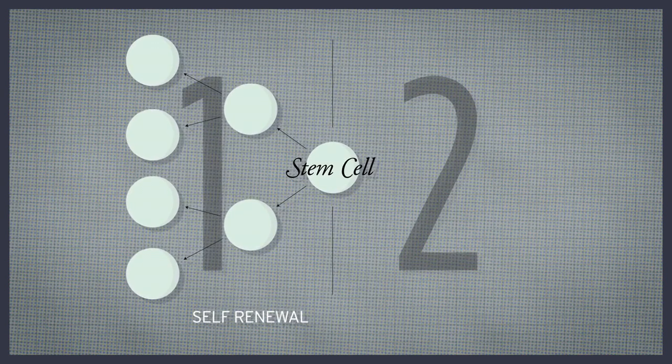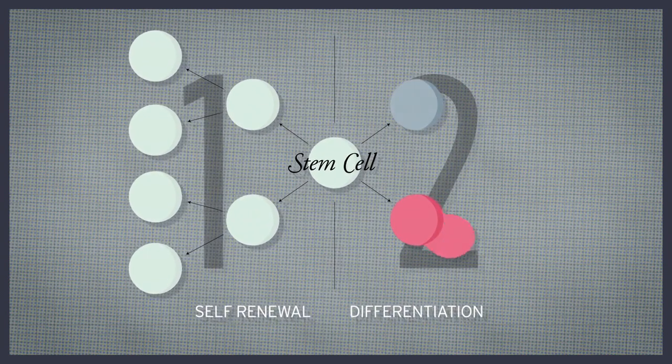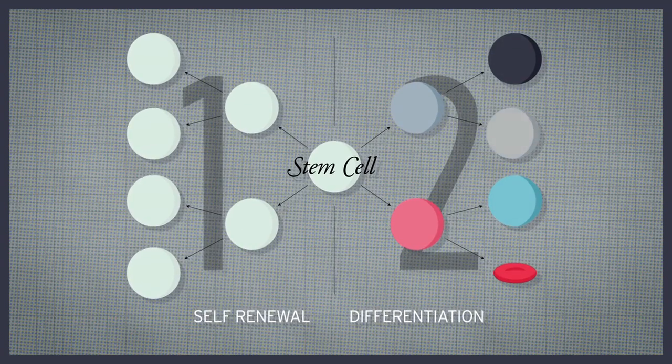Second, it must be able to differentiate. In other words, it must be able to divide and give rise to specialized cells.